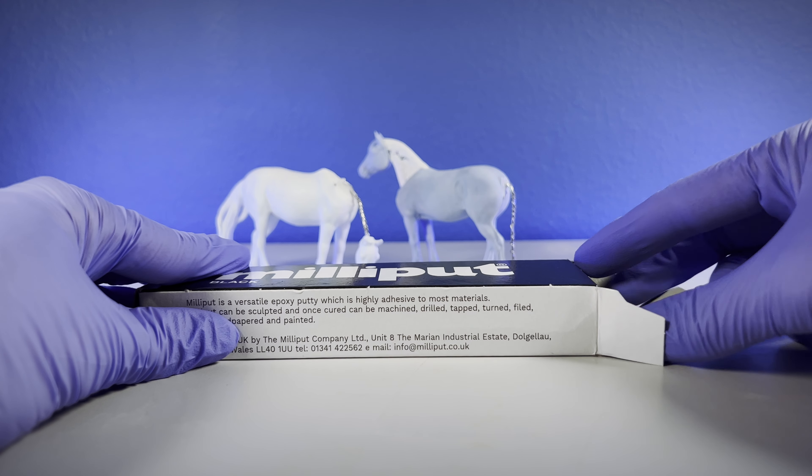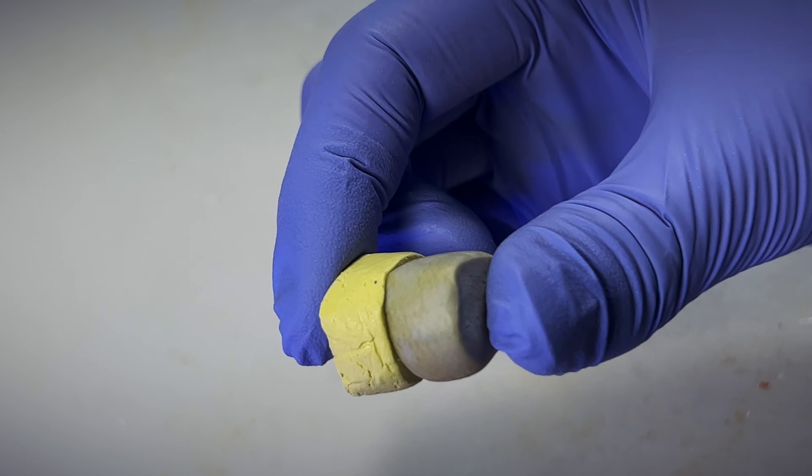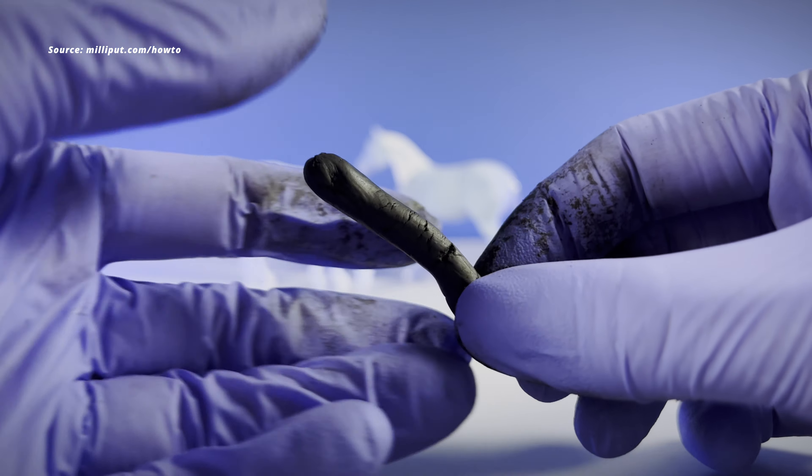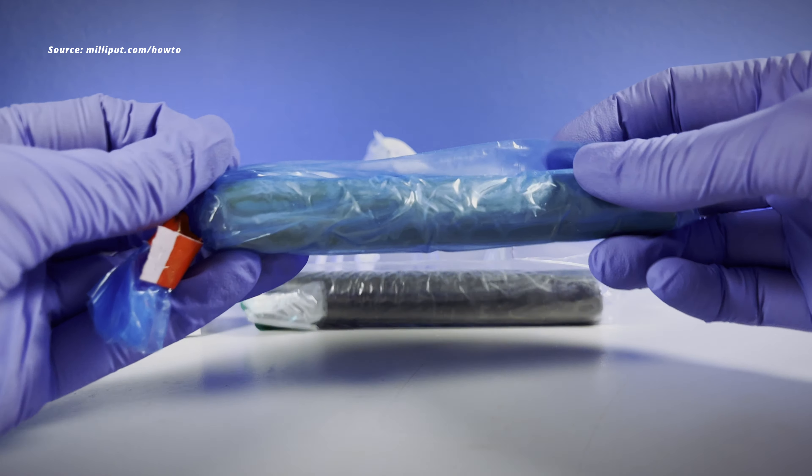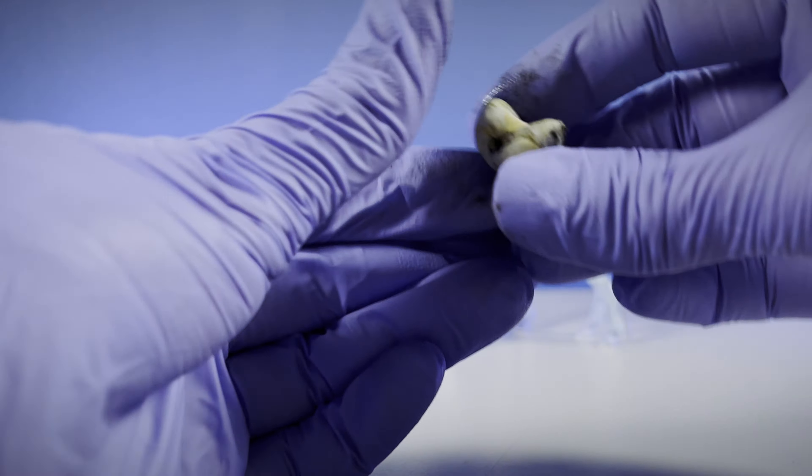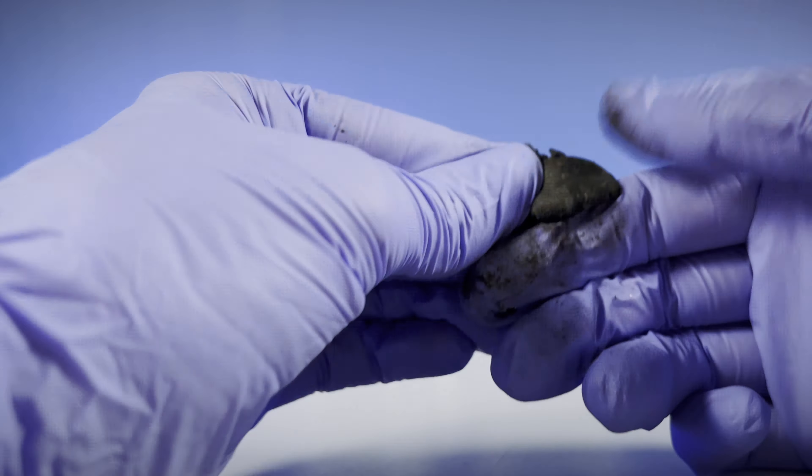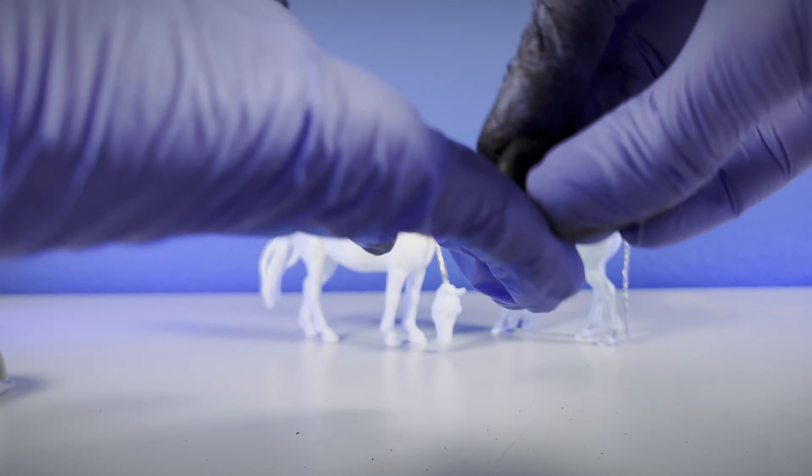To use Milliput epoxy putty, just grab equal bits from each stick and squish them together in your gloved hands for five minutes until they become one color. One stick is resin, the other is hardener. When mixed, they form epoxy putty. I like to fold, roll, and fold again to make sure it's well mixed like I'm an artisanal bread maker with tiny dough.